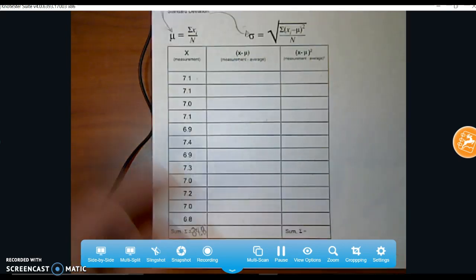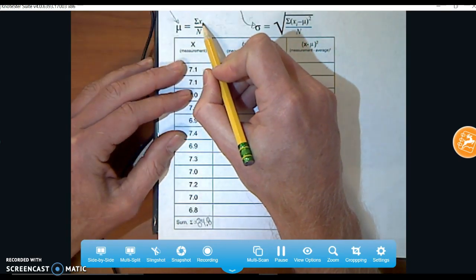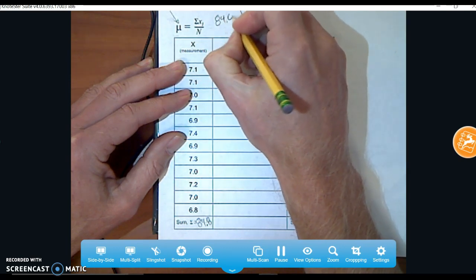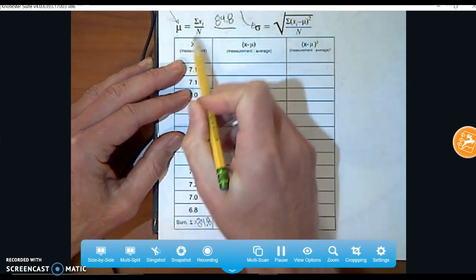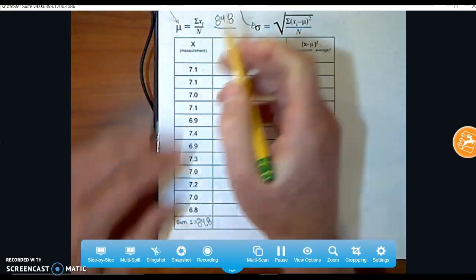Once you have that value, we're almost done with the average, right? That's what this symbol means, the sum of measurements, x. So I'm going to put there 84.8. And now I just divide by n. And n, in this case, was 12. There was 12 of those.